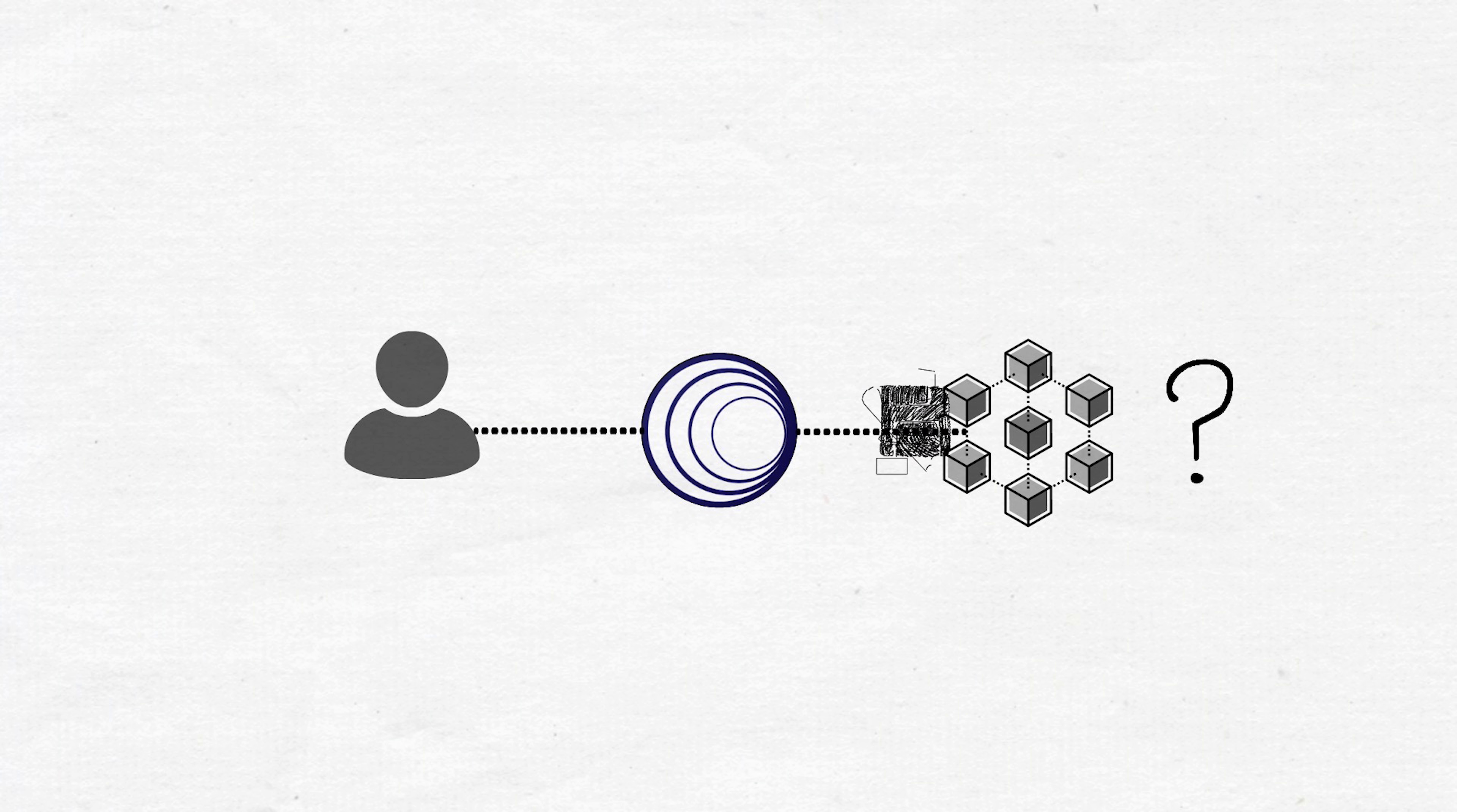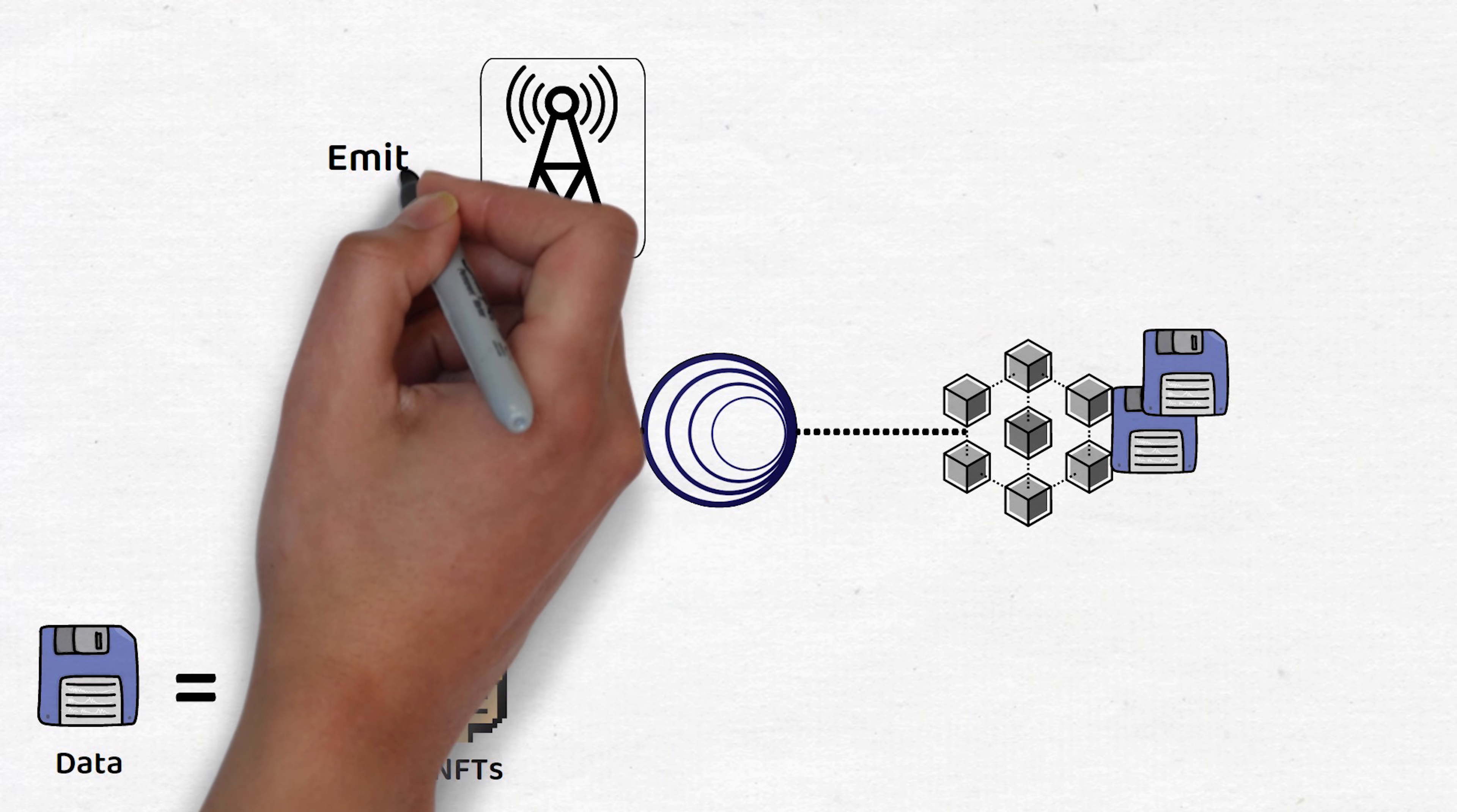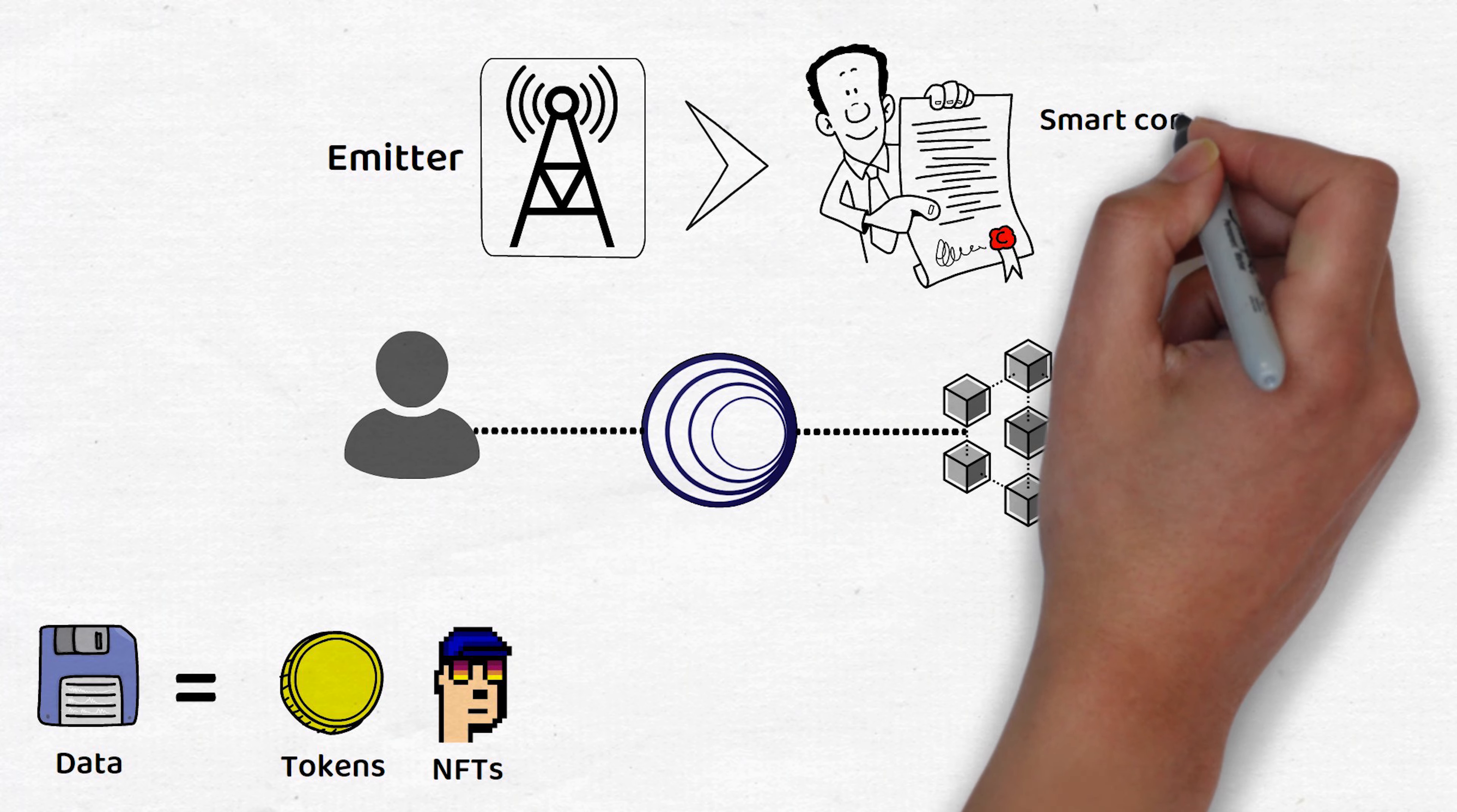the process of sending data to another blockchain through Wormhole, such as tokens or NFTs, starts with the emitter. The emitter is just a smart contract that creates and sends a message using Wormhole's core system.